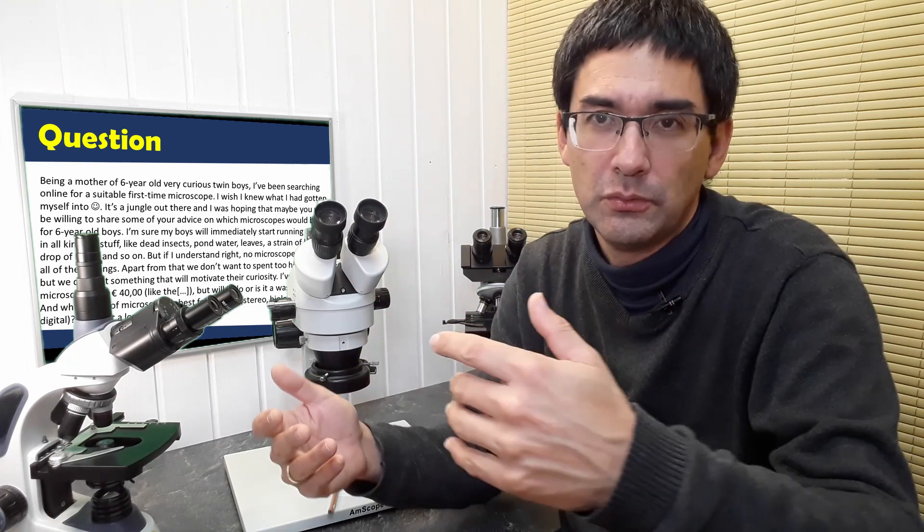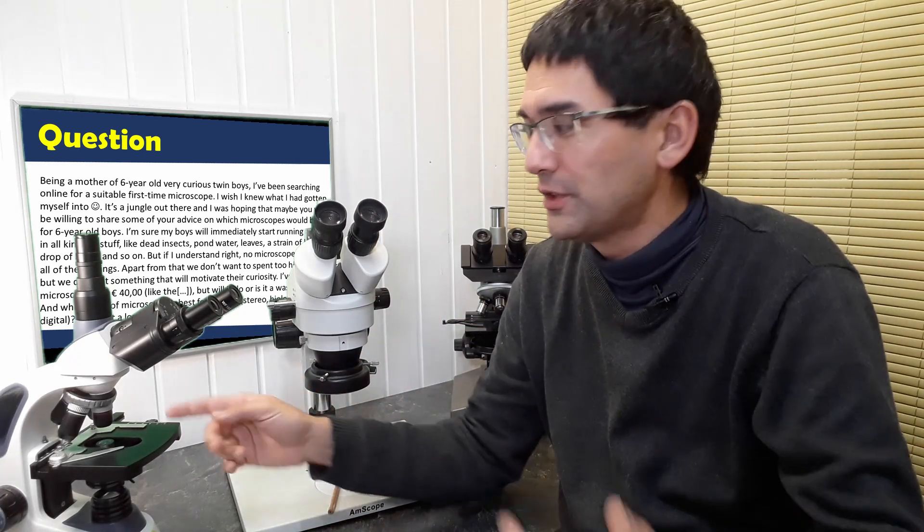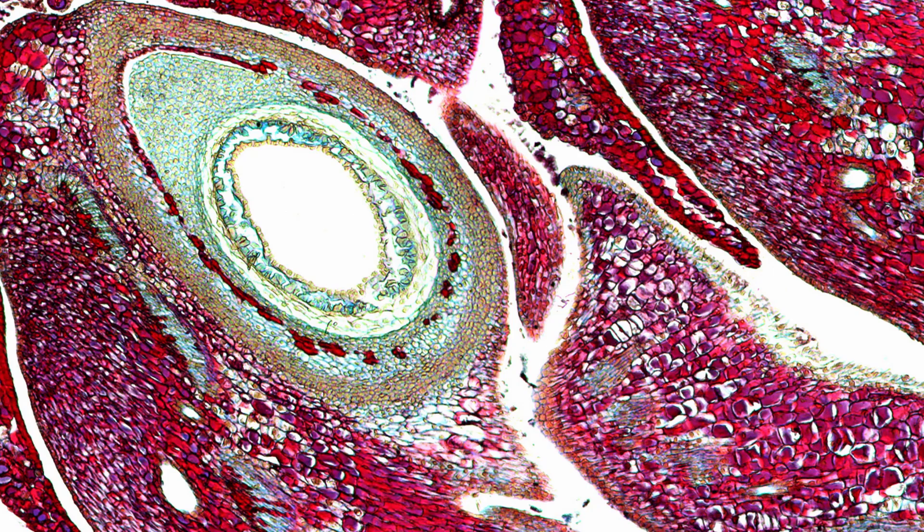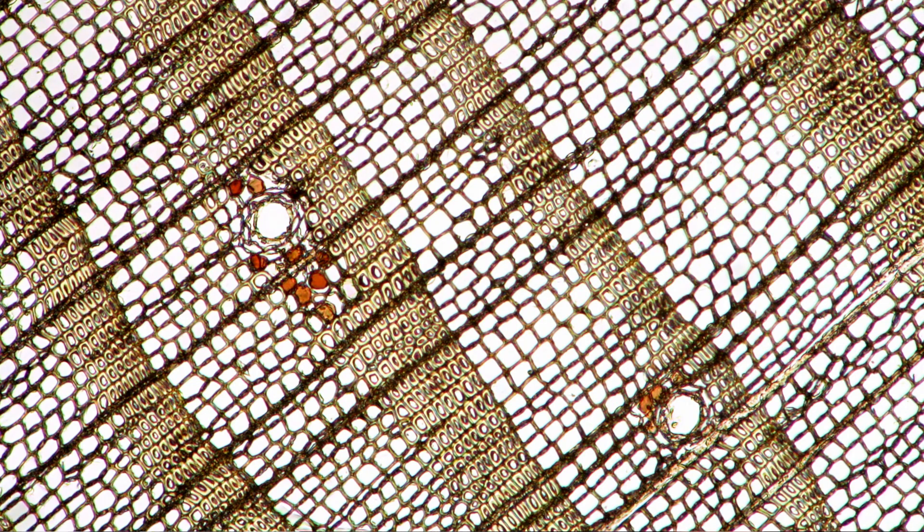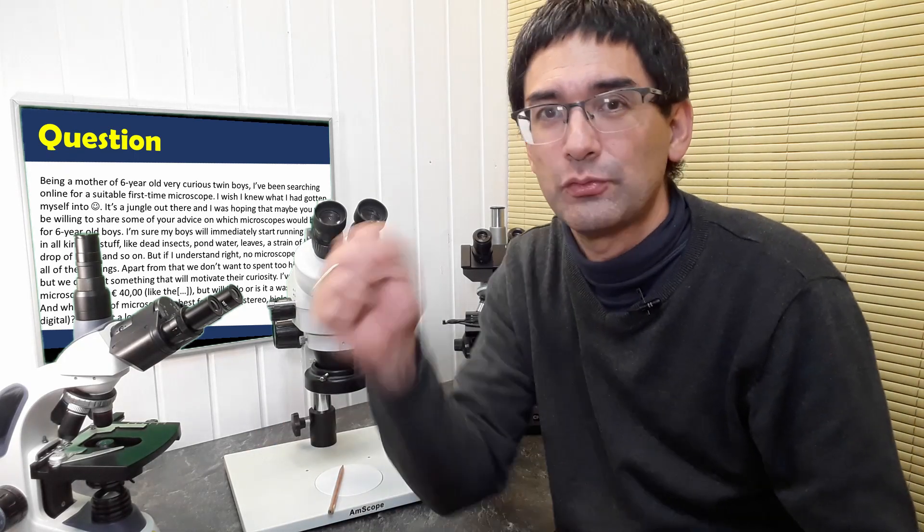But here you need microscope slides. And the object has to be very small. You get a picture that's turned on its head. It doesn't really matter because it's so small anyway, that you don't know what's right side up and what's flipped around. But the image is quite abstract. So you don't have, it's kind of distanced in that sense. I mean, okay. Then you're able to see maybe the red blood cells around little things. Interesting. That's it.